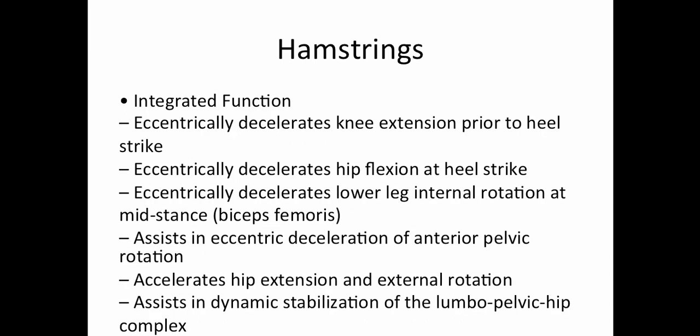The integrated function of the hamstrings is that they eccentrically decelerate knee extension prior to heel strike in gait, and eccentrically decelerate hip flexion at heel strike. They eccentrically decelerate lower leg internal rotation at mid stance — primarily the function of the biceps femoris. They assist in eccentric deceleration of anterior pelvic rotation, accelerate hip extension and external rotation, and assist in dynamic stabilization of the lumbopelvic hip complex.